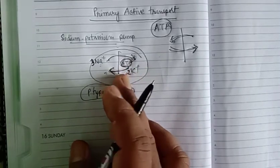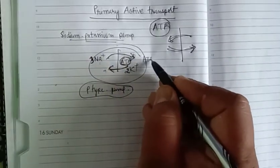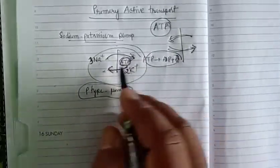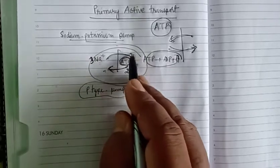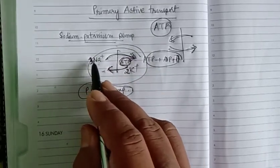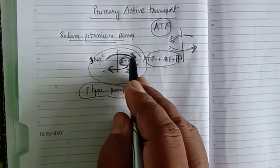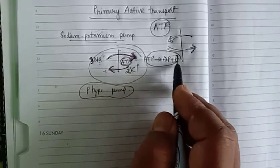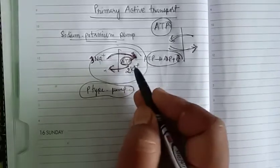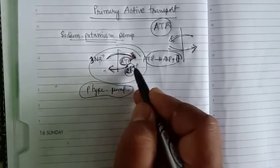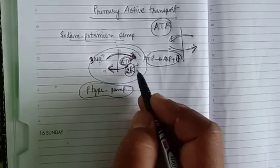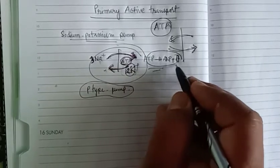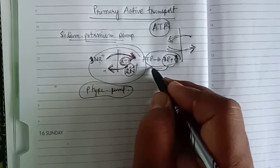Then the phosphorylation reverses — phosphorylation means the breakdown of ATP to ADP plus inorganic phosphate. So during this process, when three sodium ions are released outside, ATP converts to ADP plus Pi. Then the two potassium ions are transported inside. After that, phosphorylation is reversed, meaning ADP plus Pi is converted back to ATP.